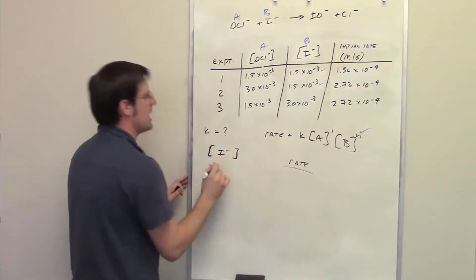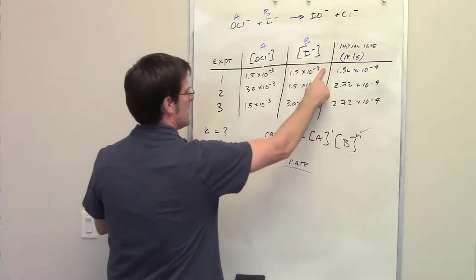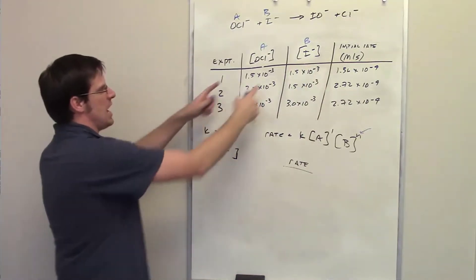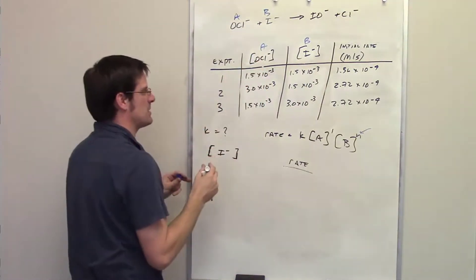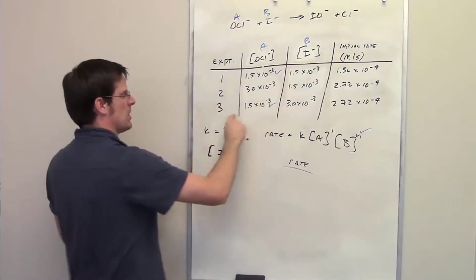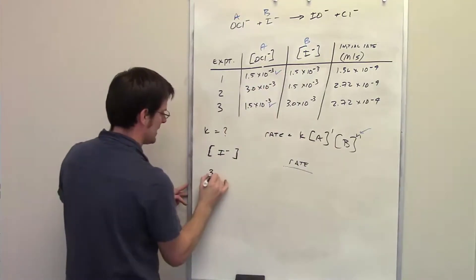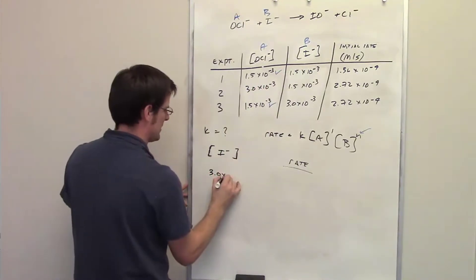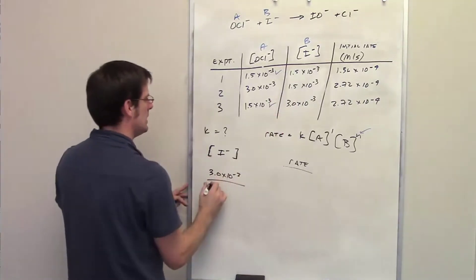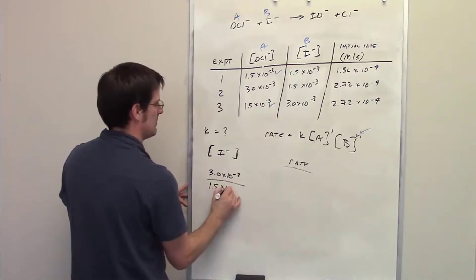Iodide! Concentrations here for iodide. I'm going to focus once again on the experiments where the other component A were kept the same. That's going to be experiments 1 and 3. In experiment 3, the iodide concentration was 3.0 times 10 to the negative 3. In experiment 1, it was decreased to 1.5 times 10 to the negative 3.